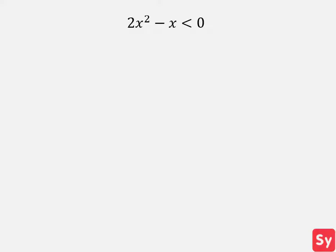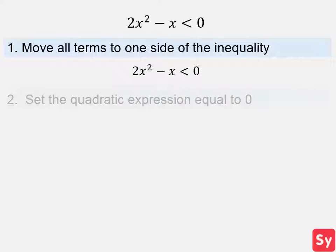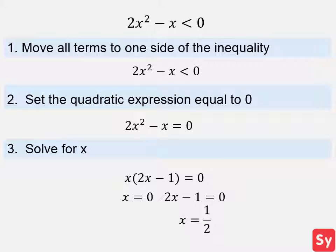Next example: we have 2x² minus x is less than 0. First, we want to move all the terms to one side of the inequality — this is already done, so we move on to the next step. Next, we set the quadratic expression equal to 0. Then we solve for x: we can factor out an x and get x times (2x minus 1) equals 0. We set each factor equal to 0, giving us x equals 0 and x equals 1/2.